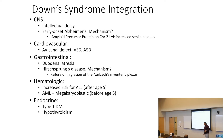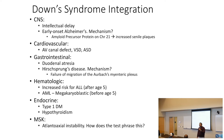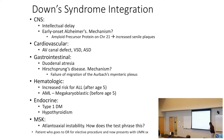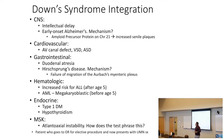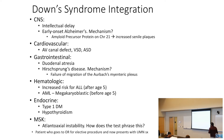Hypothyroidism and musculoskeletal: atlantoaxial instability. On the USMLE, this is phrased as a Down syndrome patient going to the OR for an elective procedure and presenting with upper motor neuron signs post-intubation, due to instability between the axis and atlas causing spinal cord injury. Rheumatoid arthritis patients also get atlantoaxial instability from chronic inflammation of these ligaments.